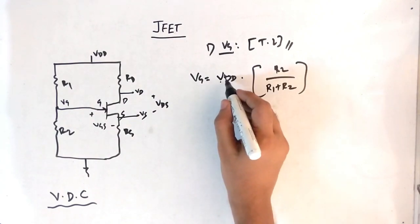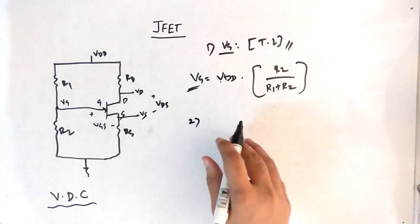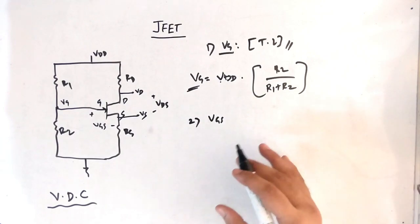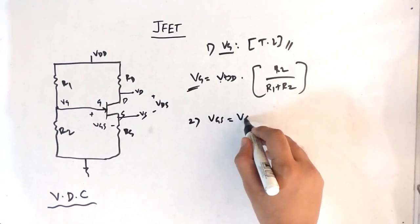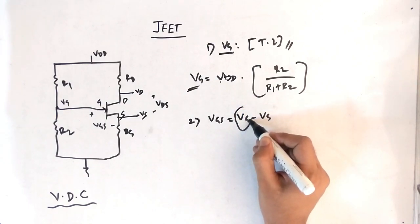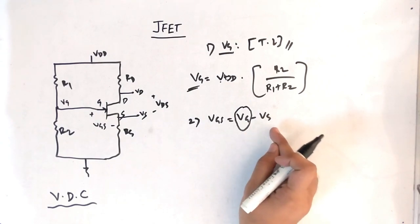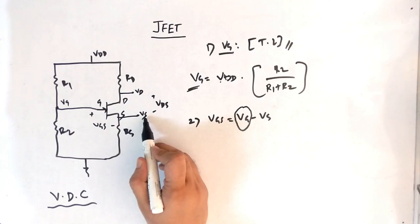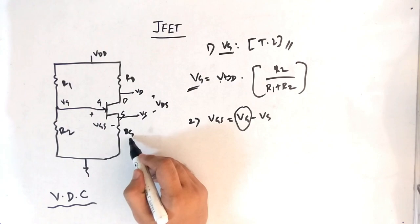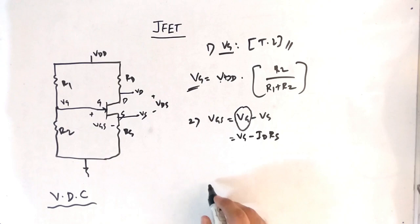The second step is to find the value of VGS. We can find this by writing VGS equal to VG minus VS. We already found VG in the first step, so we can split it this way. Now, VS can be found by applying KCL, which gives VS equal to ID times RS. Therefore VGS equals VG minus ID times RS.